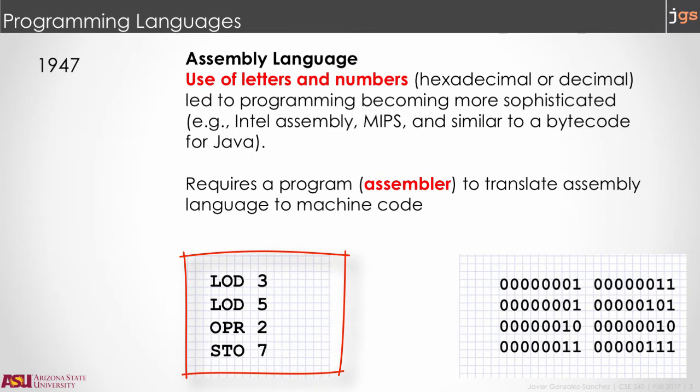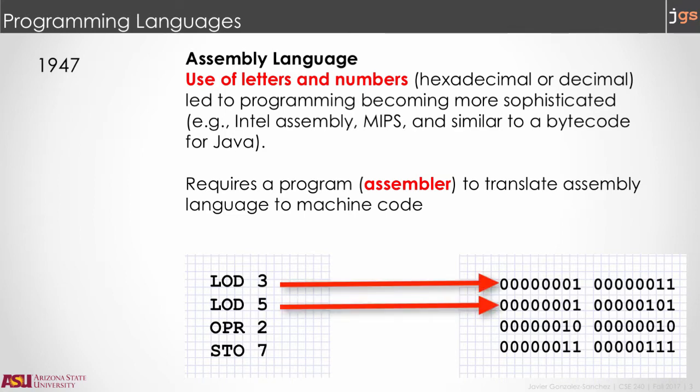This is an example of how an assembly language could look like. It is not real, it's used for pedagogical purposes, but you can see the approach. Instructions are strings instead of numeric IDs. LOD is the instruction 1, OPR is the instruction 2, 1 0 in binary, and STO is the instruction 3, 1 1 in binary. And the parameters are represented with decimal numbers.